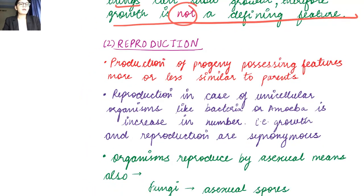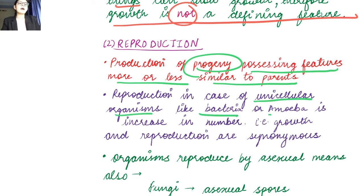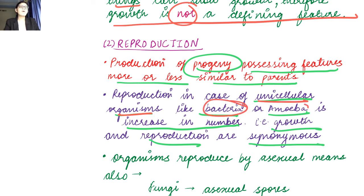Now we come to reproduction. Reproduction is the production of progeny possessing features more or less similar to the parents. In the case of unicellular organisms like bacteria or amoeba, it is basically an increase in number and the progeny will be identical. So in unicellular organisms, growth and reproduction are synonymous.